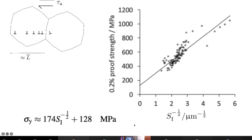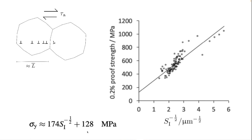Going back in history, and even in some recent papers, people find the intercept to be negative, and that is because they are fitting a very limited amount of data. The intercept is not a free parameter — it really represents the friction stress of ferrite. It's very easy to show that this cannot be represented by any other relationship than the Hall-Petch effect.